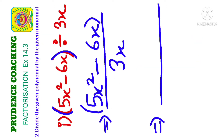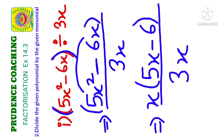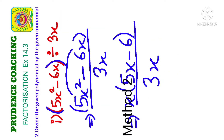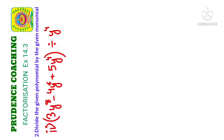Method 2: Check what is common in the numerator terms. As you can see, x is common in both terms, so take x as the common factor. You are left with 5x in the first term and 6 in the second term, giving x(5x minus 6). Write 3x in the denominator. Now x and x cancel, leaving the final answer as (5x minus 6) divided by 3.